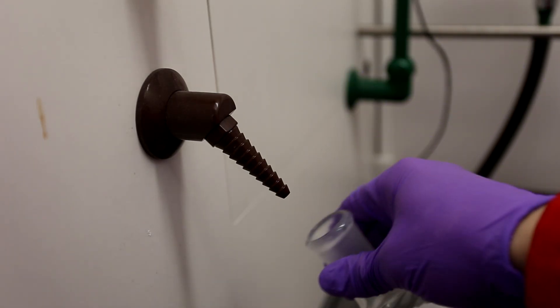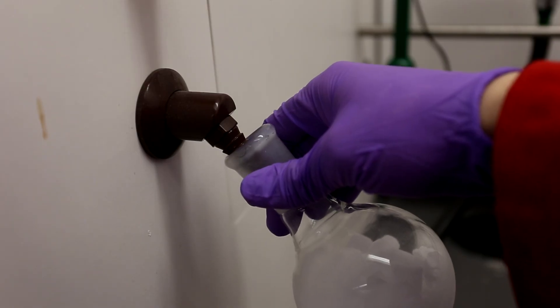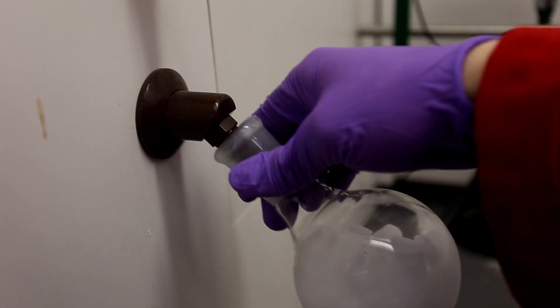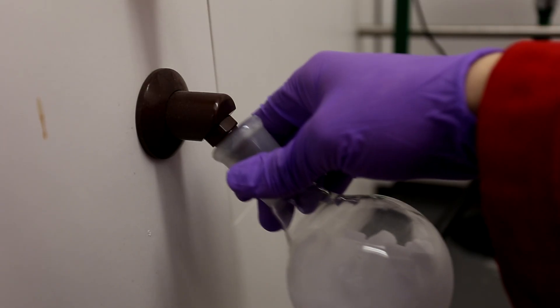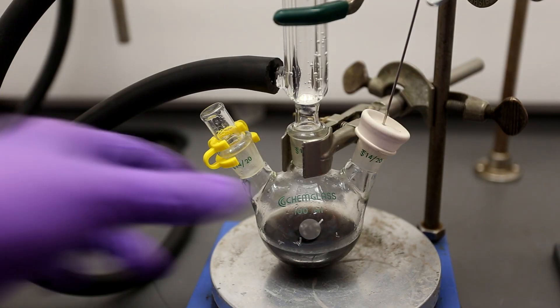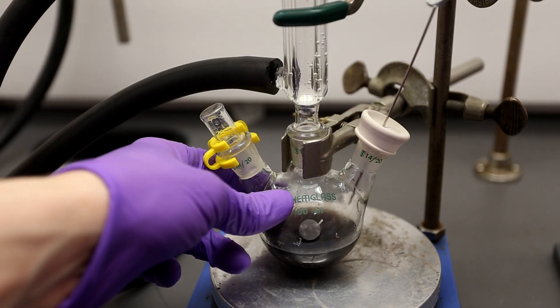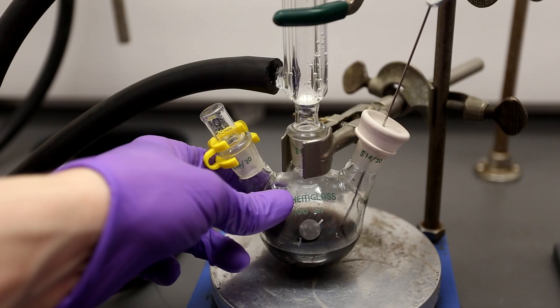Because this Grignard reagent is very sensitive to moisture, just for good measure, I flushed the flask with nitrogen as well as the feeding tube. The needle was then placed into the solution with strong stirring, and CO2 was fed in.